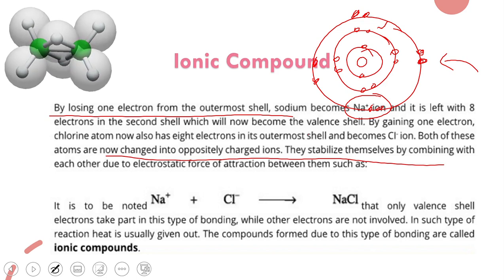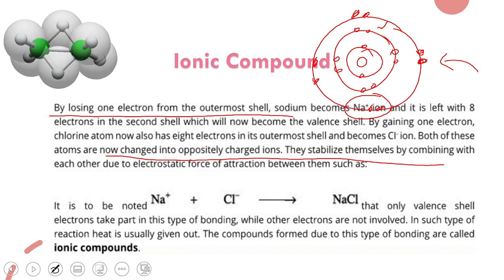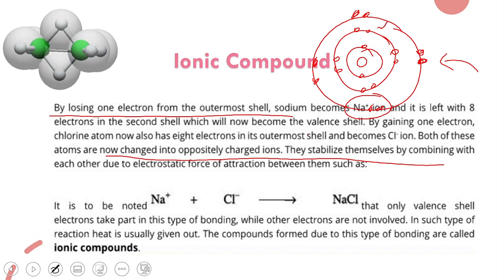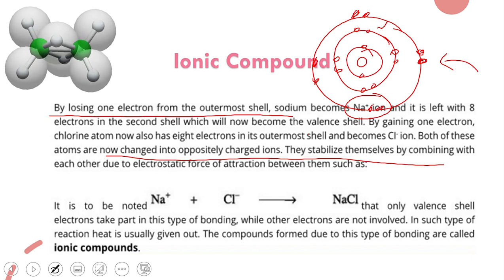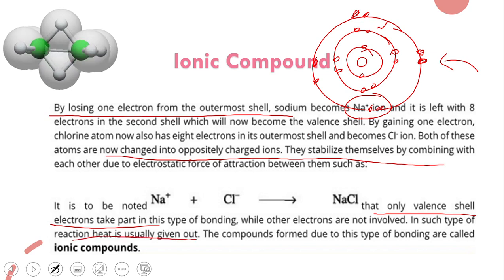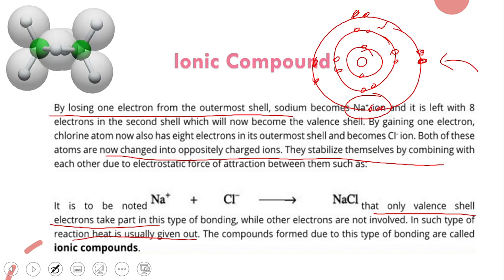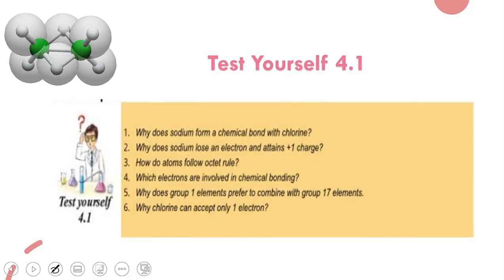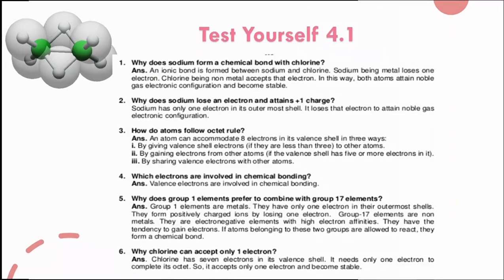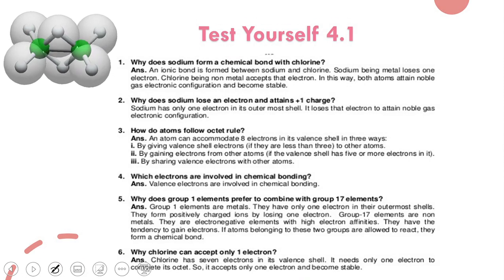It should be noted that as we defined earlier, only valence shell electrons participate in bonding — the same applies here in ionic compound formation. Only the last shell electrons participated; the inner electrons did not contribute. In this type of chemical bond, heat is usually given out. The compound formed due to this type of bonding — NaCl — is called an ionic compound. Next, we have test yourself questions regarding this topic: why does sodium form a chemical bond with chlorine? Because sodium is an electropositive metal with the ability to lose electrons, while chlorine is an electronegative non-metal with the ability to accept electrons.